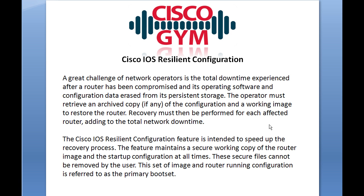What it's meant to do is minimize downtime. In the case that you have a router that's gone kaput — say the flash has been corrupted — you have to get a copy of the IOS on there, then go find a configuration and push that out to the router somehow. Cisco IOS Resilient Configuration is actually a combination of a couple of commands that make up this feature.